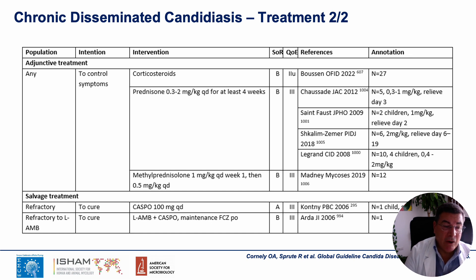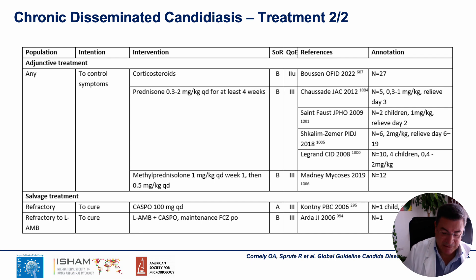In case of refractory disease or resistance to first-line treatment, you have two options: first, an increase of caspofungin from 50 mg to 100 mg, and alternatively, you can use a combination treatment with liposomal amphotericin B and caspofungin.